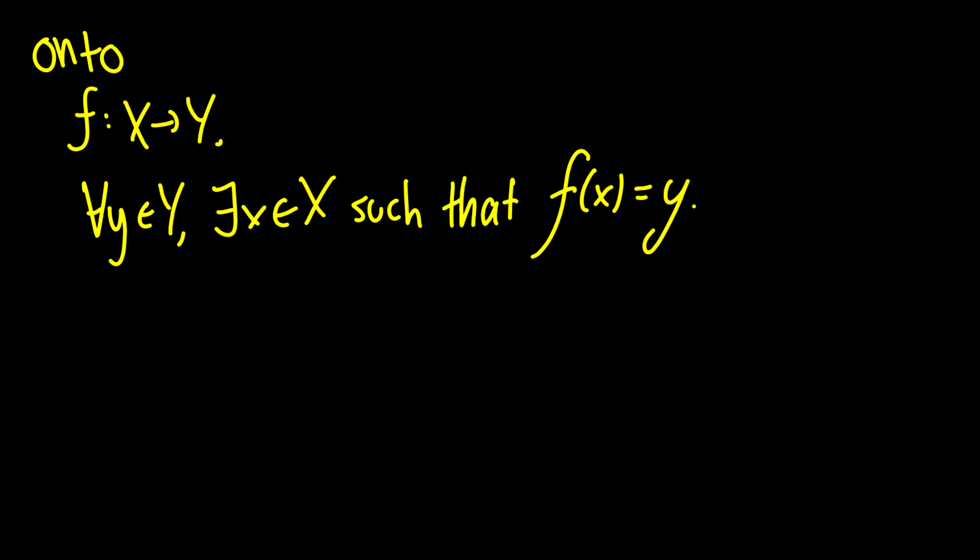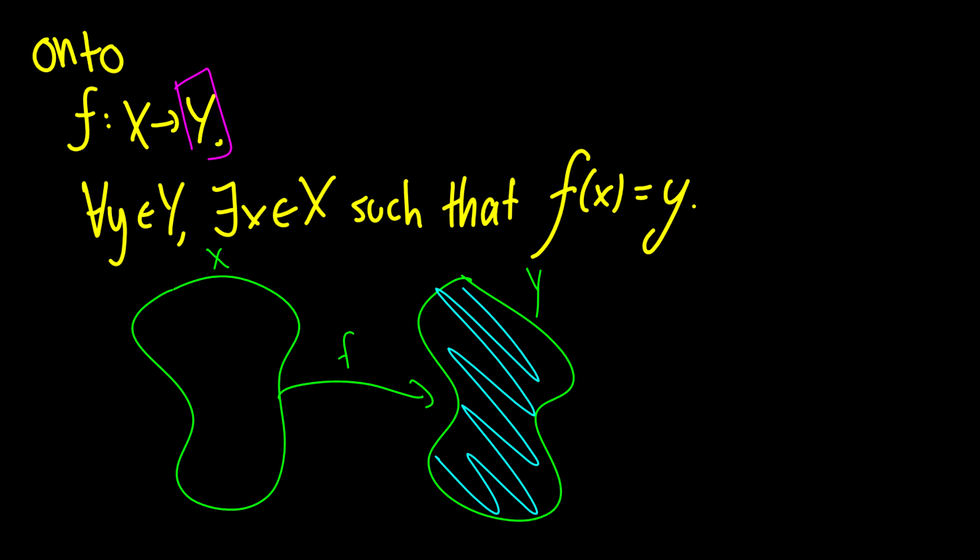Onto functions are a little bit different. They're more challenging to prove and sort of wrap your head around. Basically, if we have a function from x to y, it says that all elements in y have some x that you can put into the function and get to y. So if we have our codomain y and our domain x with a function f, the whole codomain can be reached with elements in x. Essentially, the codomain equals the range.